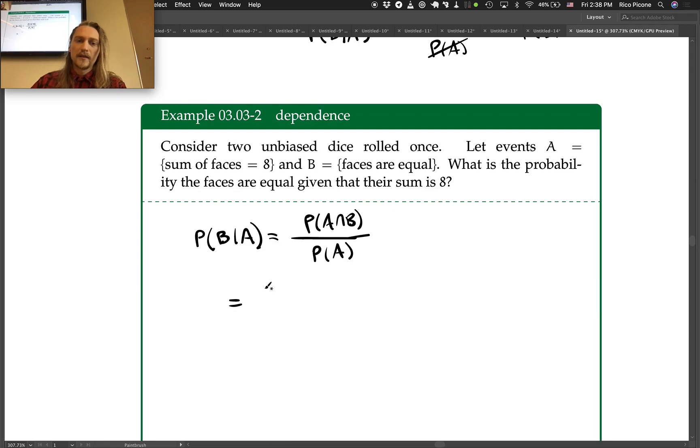What is A intersect B? What situations are those? Yeah, so 4 and 4 - that's the only time that we get the two faces being equal and have them summing to 8.